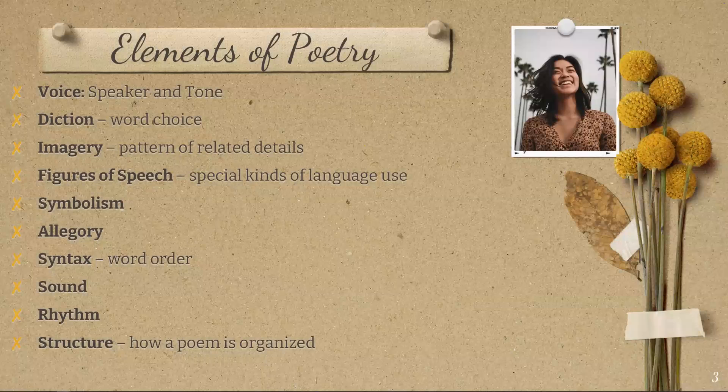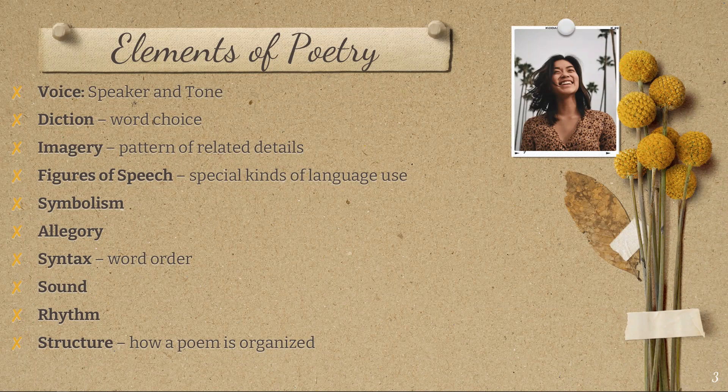Diction refers to word choice and is intimately related to imagery and figures of speech, because a poet chooses a word to achieve a certain sensory, emotional, or intellectual effect. Choosing "wandered," for example, suggests something different than "walked around," "shuffled," "drifted," "floated," etc. Each word suggests a different attitude, image, or connection.